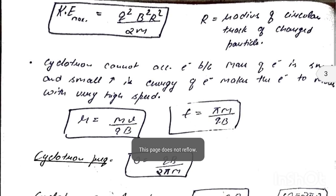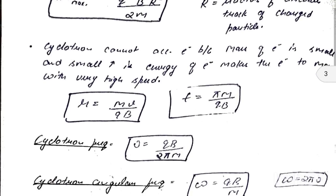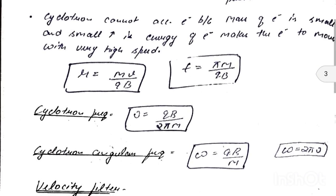The kinetic energy formula for the positive charge particle moving in the cyclotron is: kinetic energy = q²B²r² / 2m, in which q is charge, B is magnetic field, r is the radius of the circular path, and m is the mass of the charge particle.